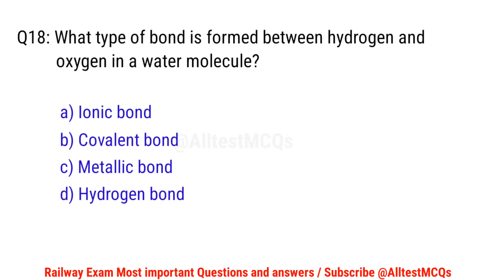Q18. What type of bond is formed between hydrogen and oxygen in a water molecule? D — the right option is B. Covalent bond.